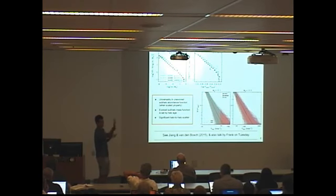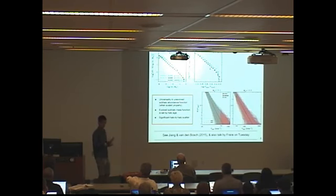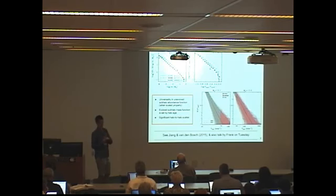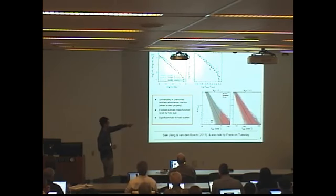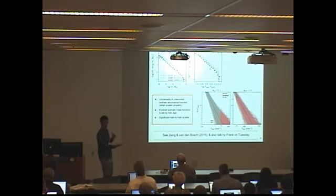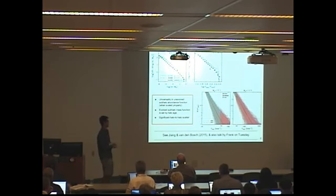What controls how much lower the evolved function is compared to the unevolved one depends on when the halo forms — that means it's related to the formation time of the host halo, which is related to the concentration of the host halo. Another point is that there is significant halo-to-halo scatter when you consider a single halo mass bin — if you bin on halo mass and look at the subhalo abundance function, you still see significant scatter.